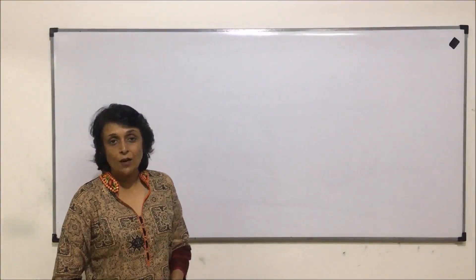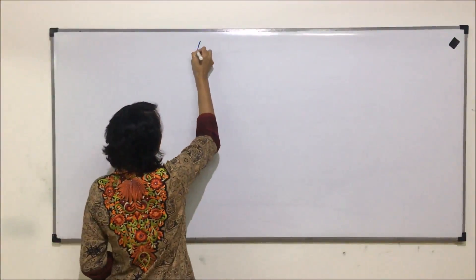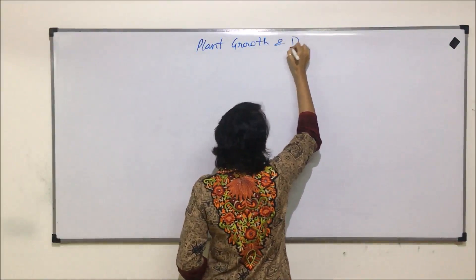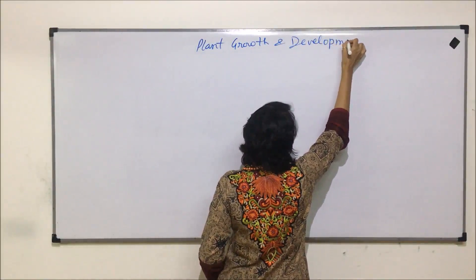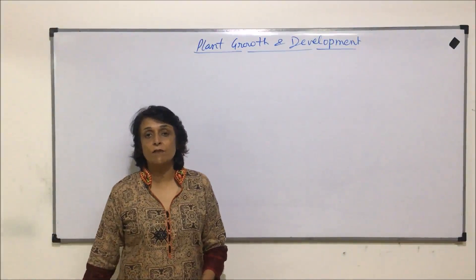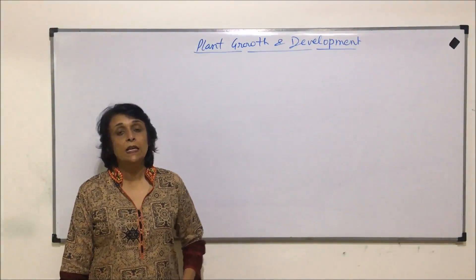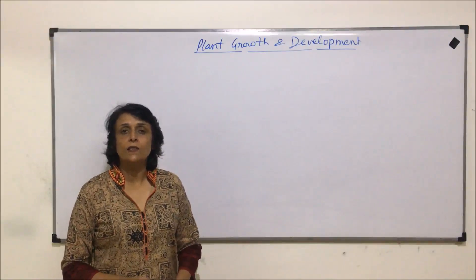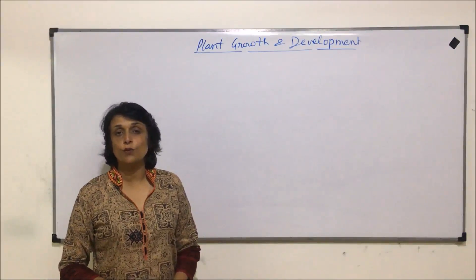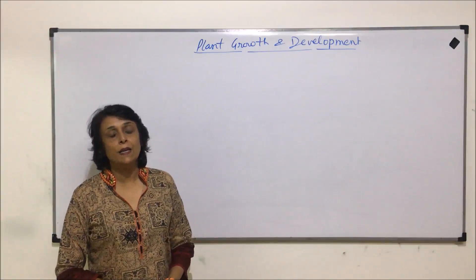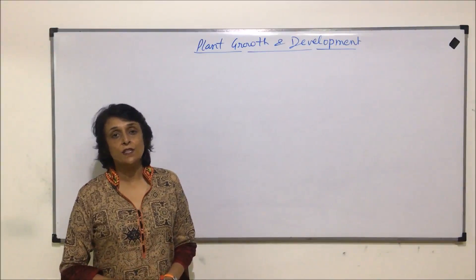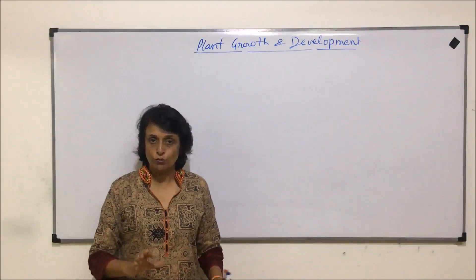We are starting with a new chapter now — plant growth and development. In this chapter, we will discuss what exactly we mean by growth in case of plants, various types of growth that we see, the growth pattern, and we will also discuss the hormones, phytohormones, which are responsible for growth of the plant. Towards the end, we will also talk about factors like light, photoperiod, long day plants, short day plants, and all those categories.